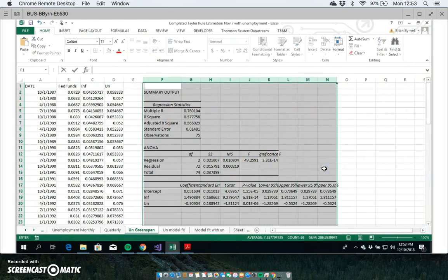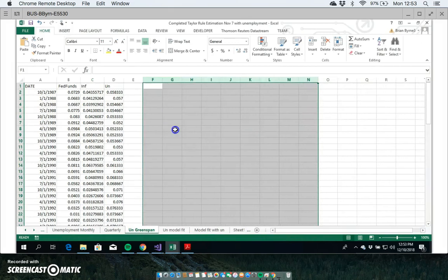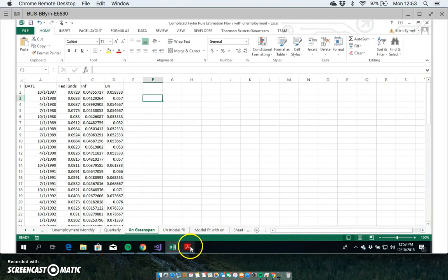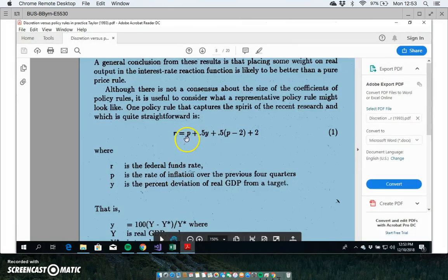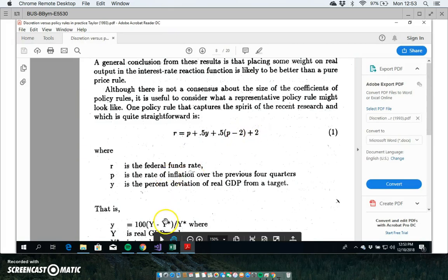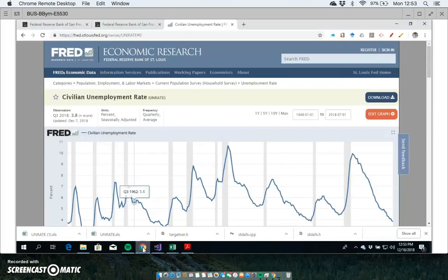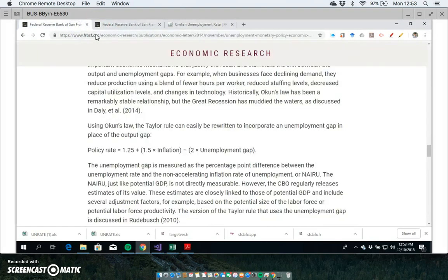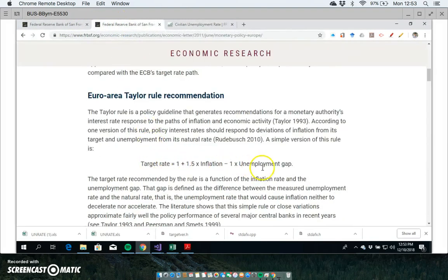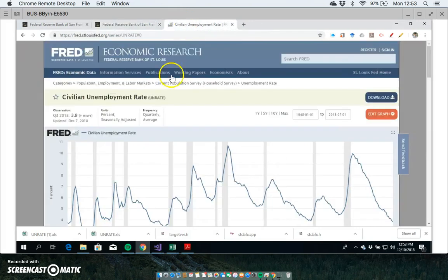What I might do here just to get the ball rolling is just delete that, get rid of that. I'm going to say delete and just run that regression again. If you want to run the basic estimate here, we're taking this policy rule if we estimate for the Greenspan period which covers the period 1987 to 2006.